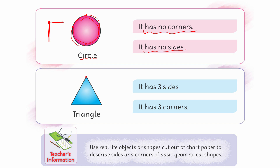अब next shape पर move करते हैं। इसके देखो कितने corners हैं — one, two, three — यानी it has three corners। अगर इस corner को किसी line से मिला दिया जाए तो वो side कहलाती है। Sides count करो: one, two, three। It has three sides, it has three corners। ये थीं characteristics of geometrical shapes।